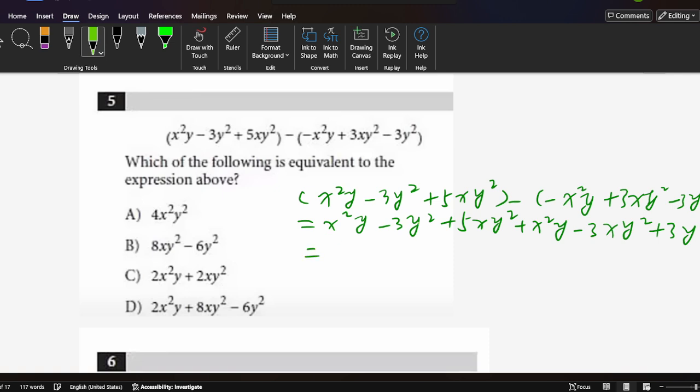Then combine the same terms. x²y, x²y, so 2x²y. Then 5xy² minus 3xy². Let's combine together: 2xy². Then negative 3y² positive 3y² cancel.